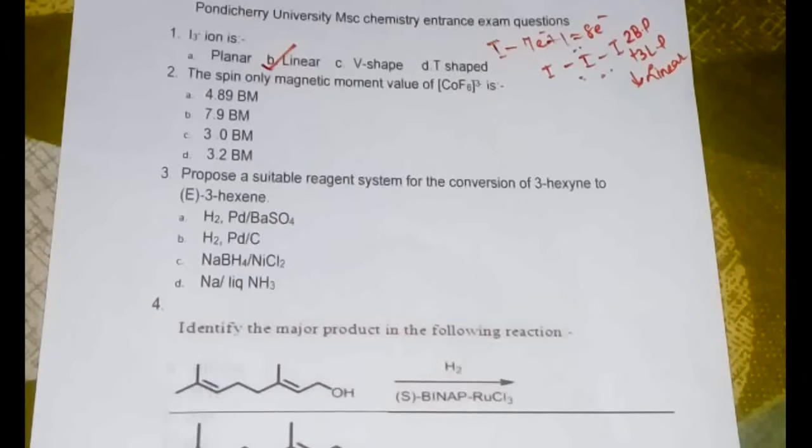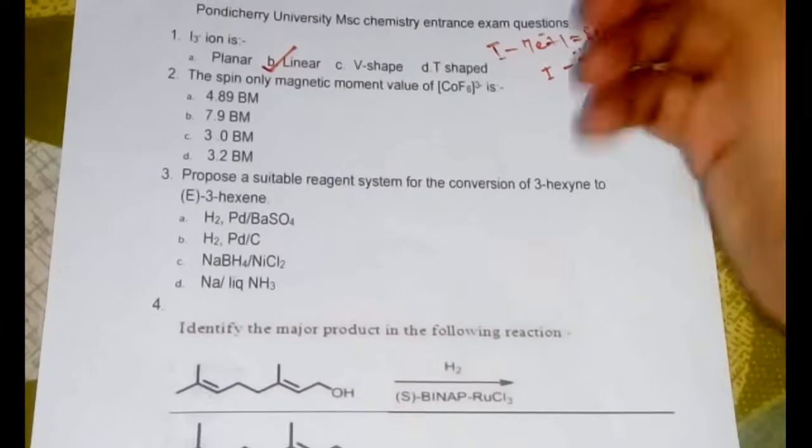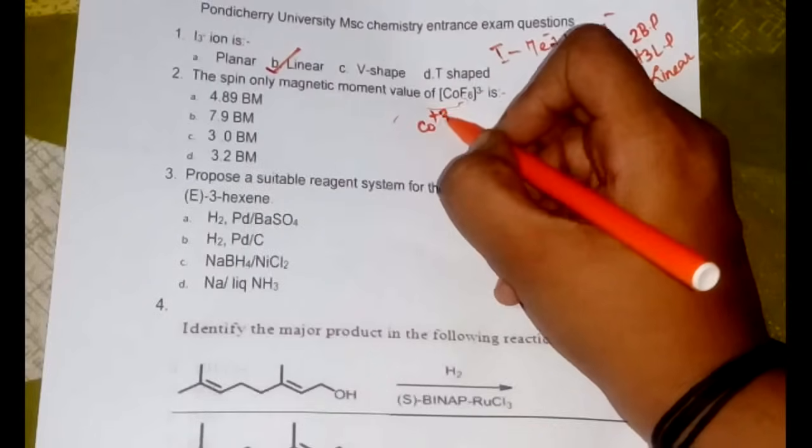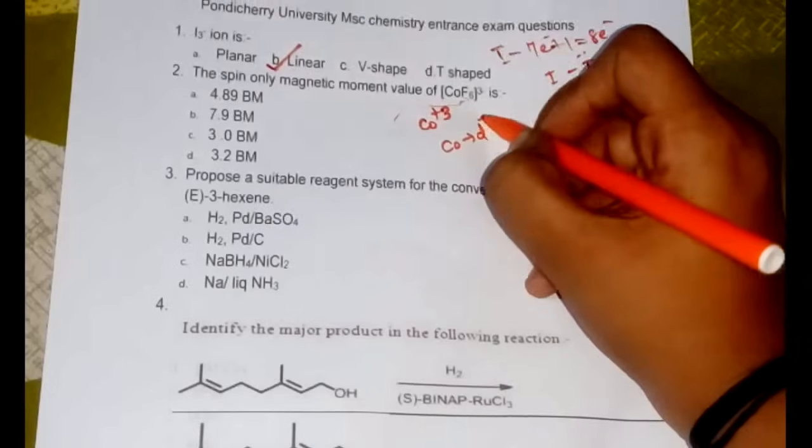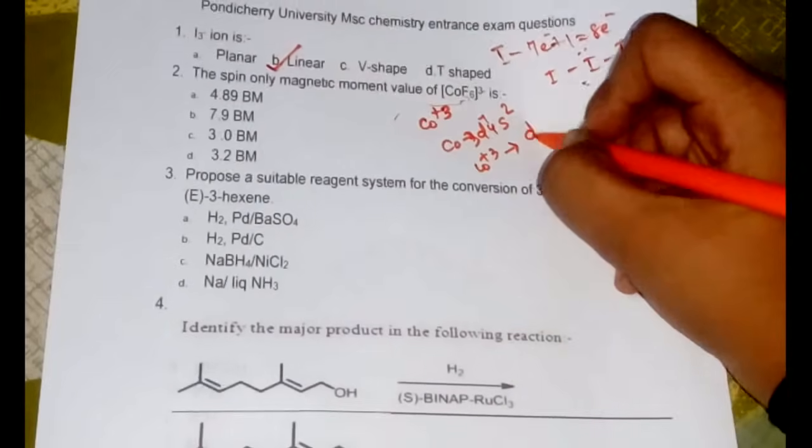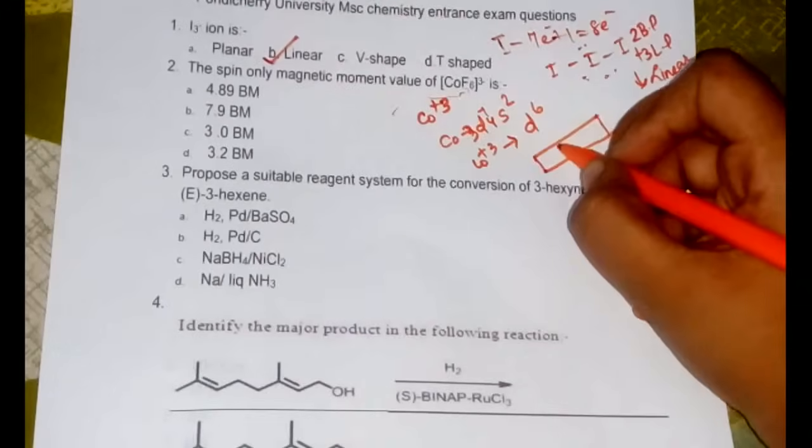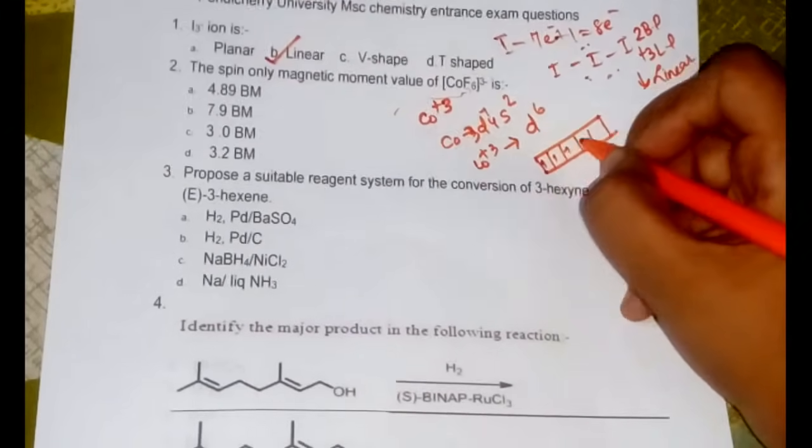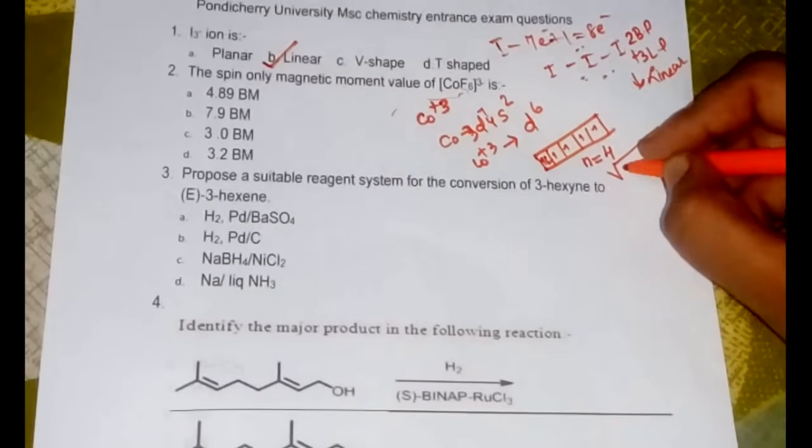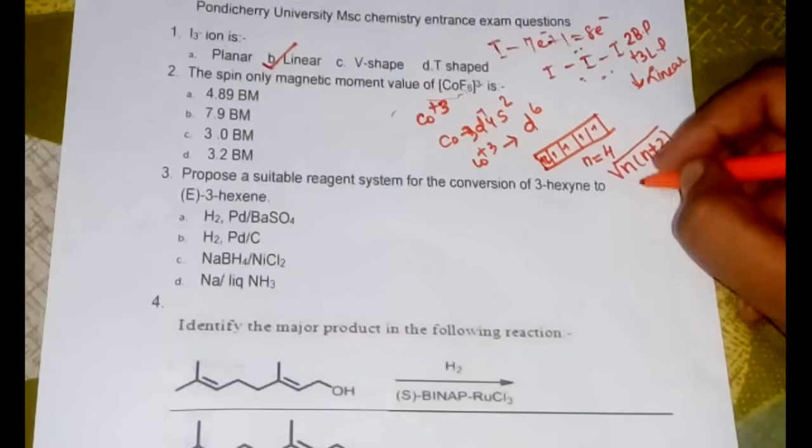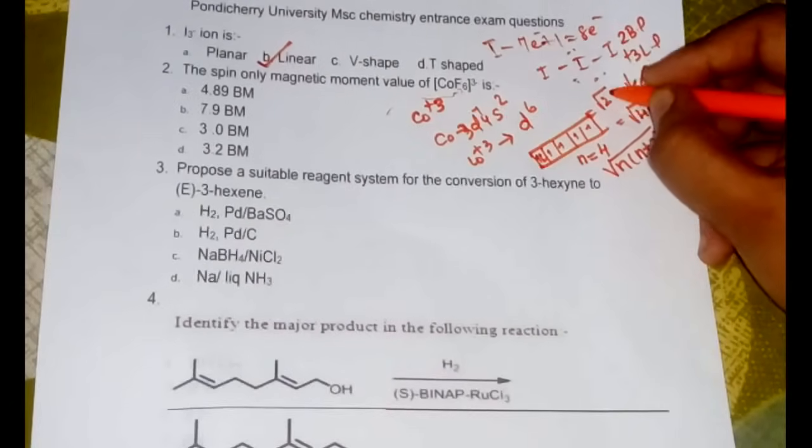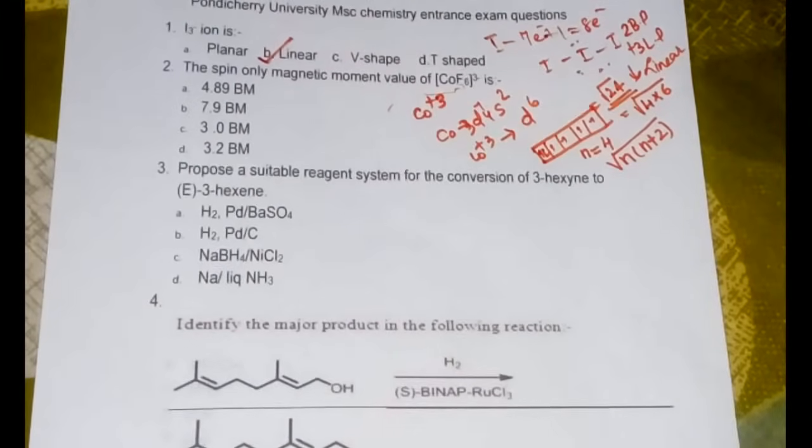The second question here is the spin only magnetic moment value for CoF6 3-. So the oxidation state of cobalt will be Co3+. Now cobalt is having 3d7 4s2, so Co3+ would be d6. Now we will be filling in the d6 to find the number of unpaired electrons: one, two, three, four, five, and six. So the total number of unpaired electrons n will be equal to four. The formula is root of n into n plus two, substituting that we will be having root of 4 into 6 which is equal to root 24.